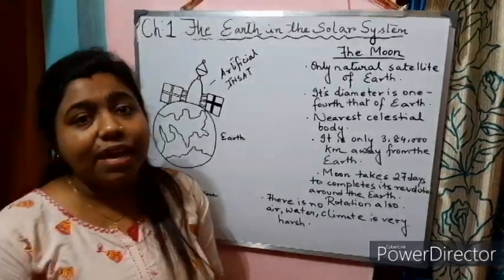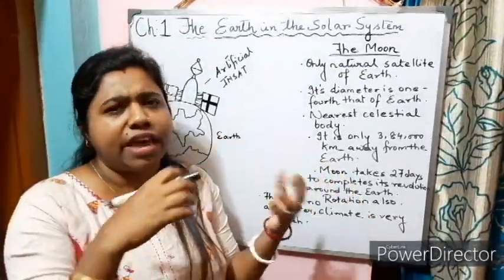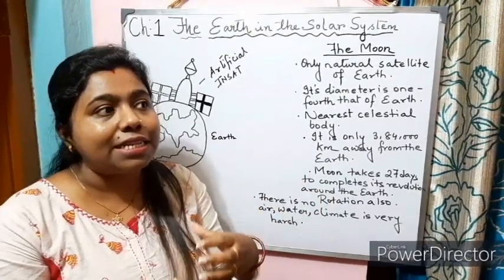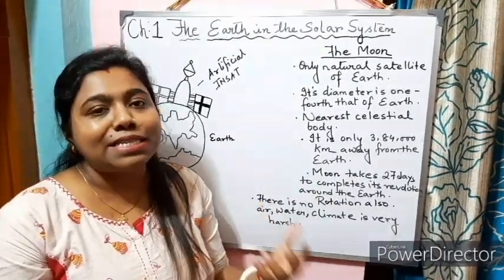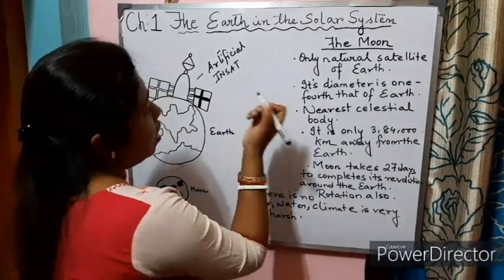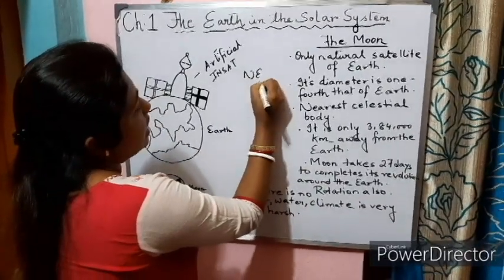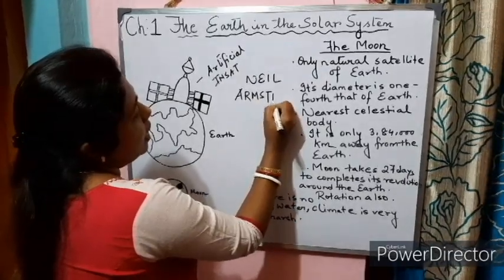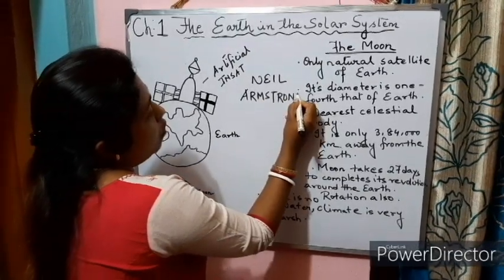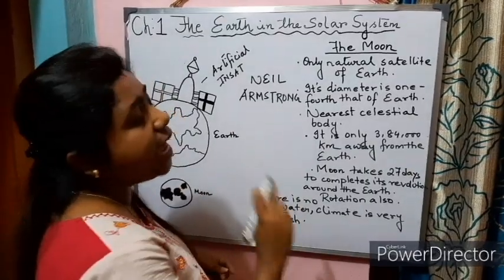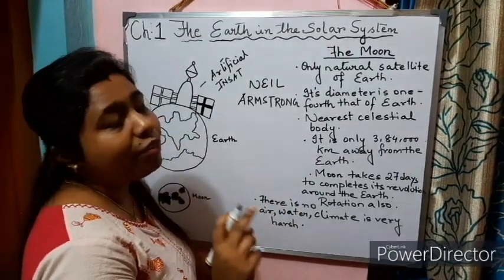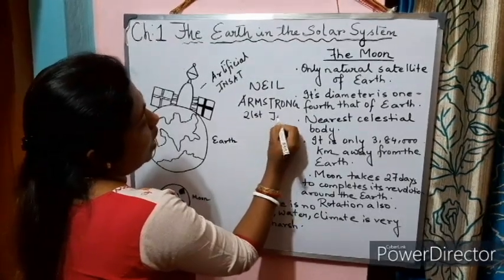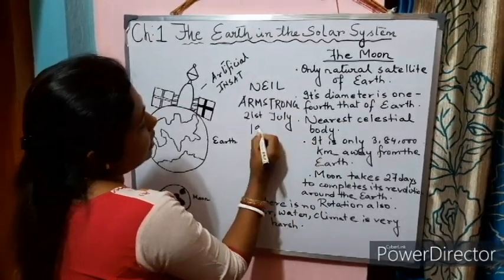On the Moon, we can see craters and hills. There are different craters and we can see shadows when we observe the Moon. There was a man named Neil Armstrong who was the first person to walk on the Moon on 21st July 1969.